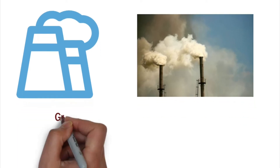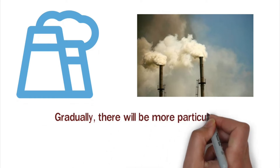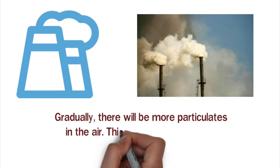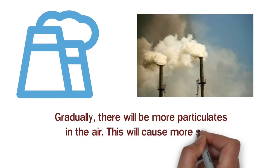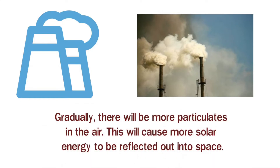With time, these small particles build up in the earth's atmosphere, making it darker. This causes global dimming. Gradually, there will be more particulates in the air, which will cause more solar energy to be reflected out into space.